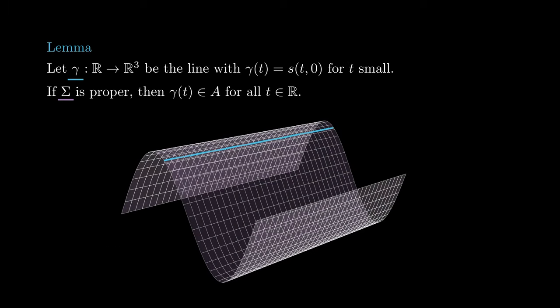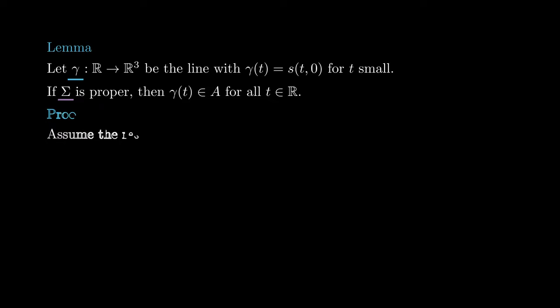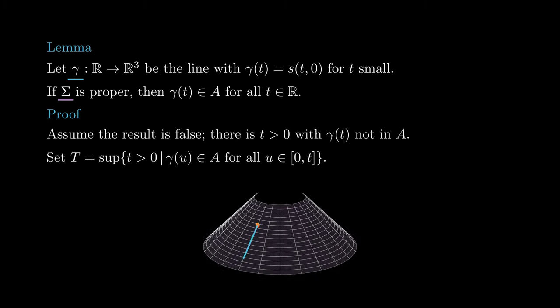Now let gamma of t be the line that contains the segment s of t, 0. We claim that if sigma is proper, then gamma is fully contained in A and so in sigma. Recall that a surface being proper means that it is a closed subset of R3. Assume by contradiction that it doesn't. Since we can revert the orientation of gamma, we can assume that there is t greater than zero with gamma of t not in A. Now let uppercase T be the supremum of t for which gamma of u is in A for u in the interval 0 to t.